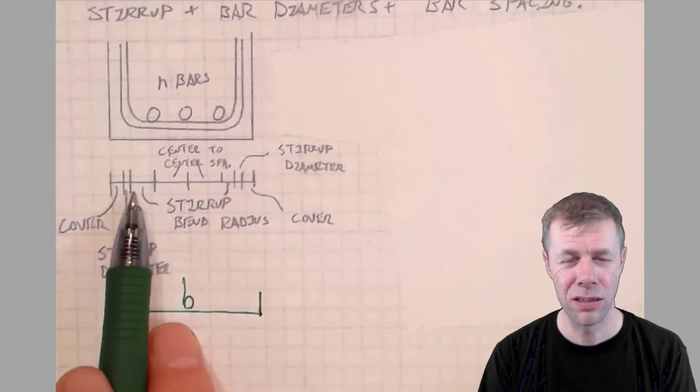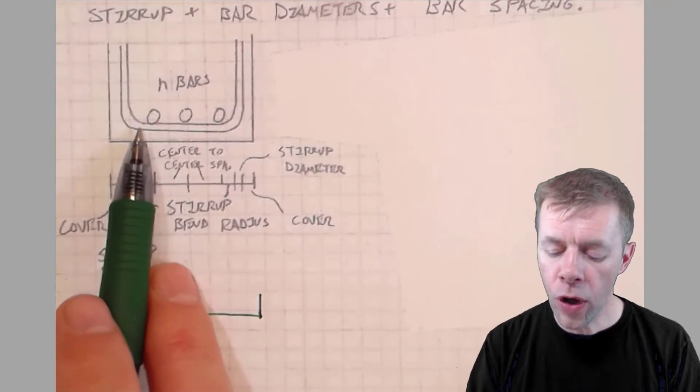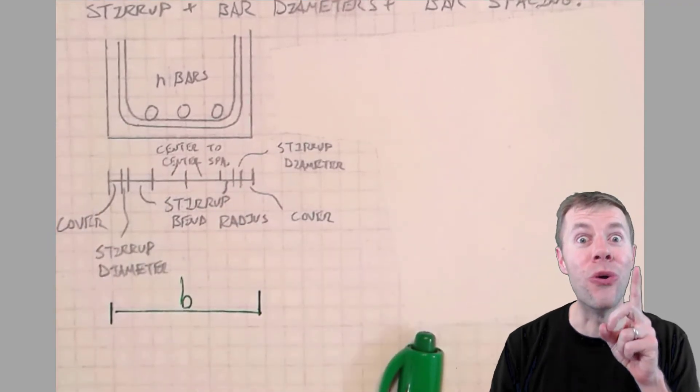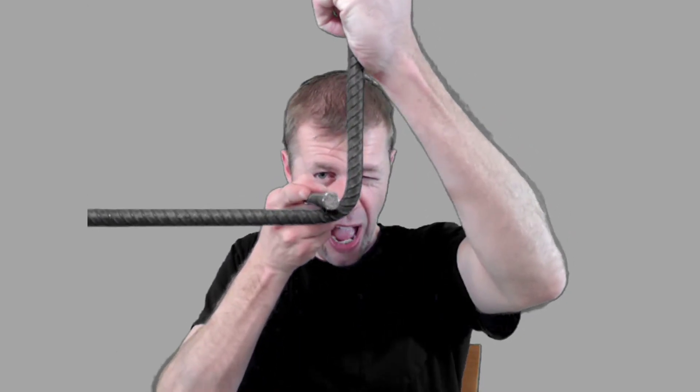You're like bend radius? What's that all about? Why can't we just put our bar all the way over here in the corner? I'll show you. I've got a stirrup, a number four bar that's been bent to be a U. I've got another bar. And if I try to put this bar over in the corner, it won't go. I can't put it in the corner. It won't go. Why is that? If I look down here, this has got a certain radius to the bend. I can't get it all the way in the corner.